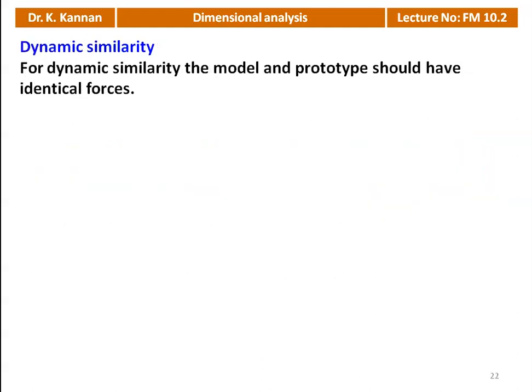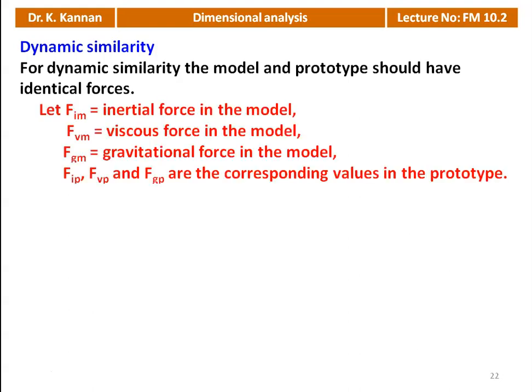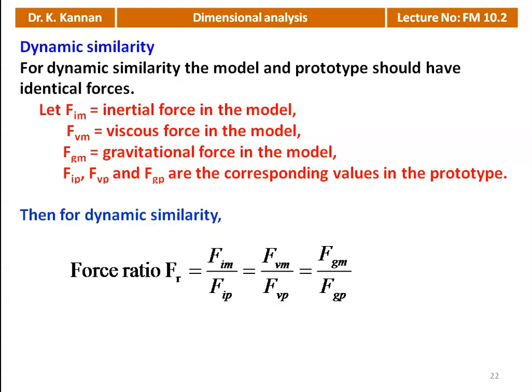For dynamic similarity, the model and the prototype should have identical forces. The force ratio must satisfy: Fi_m/Fi_p = Fv_m/Fv_p = Fg_m/Fg_p, where Fi is inertia force, Fv is viscous force, and Fg is gravitational force. We have to calculate the force ratio for dynamic similarity. The model and the prototype should satisfy all three conditions: geometric, kinematic, and dynamic similarity.